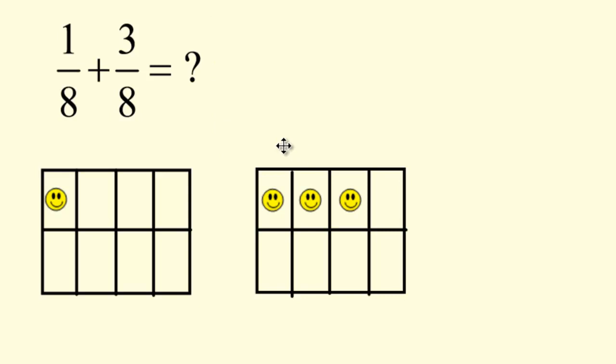Addition just means you take two quantities and you put them together. So let's put our quantities together. Let's grab this eighth and drag it over to here. We can see that 1/8 plus 3/8 equals four little boxes, and remember each little box represents an eighth. So we can say that 1/8 plus 3/8 equals 4/8.